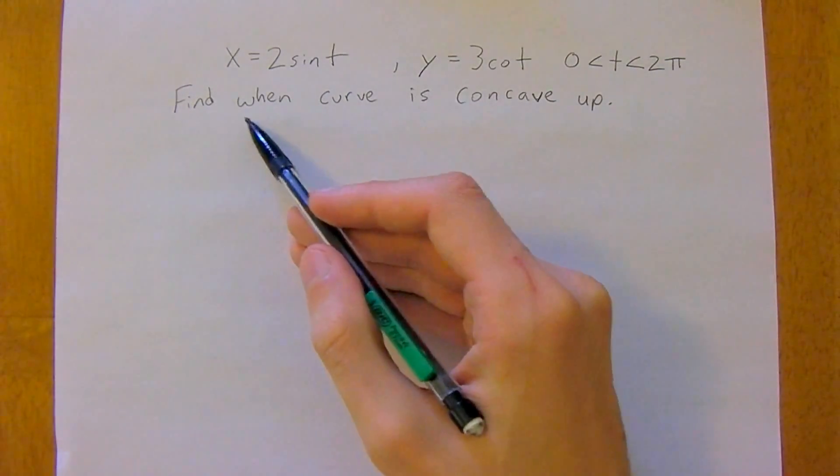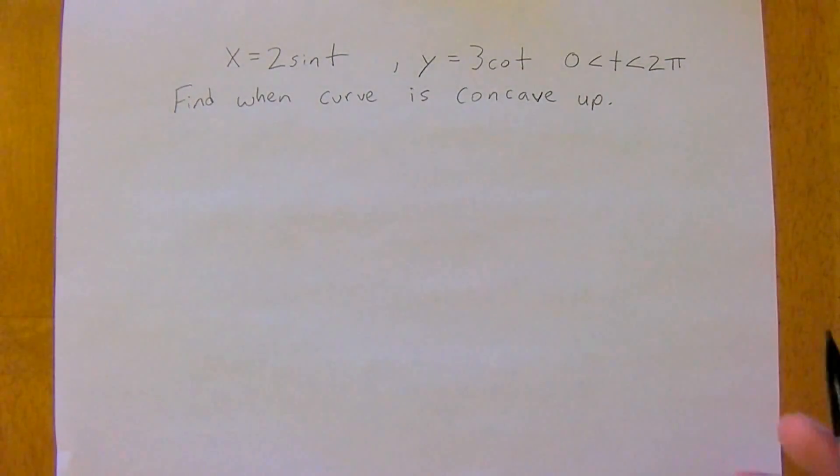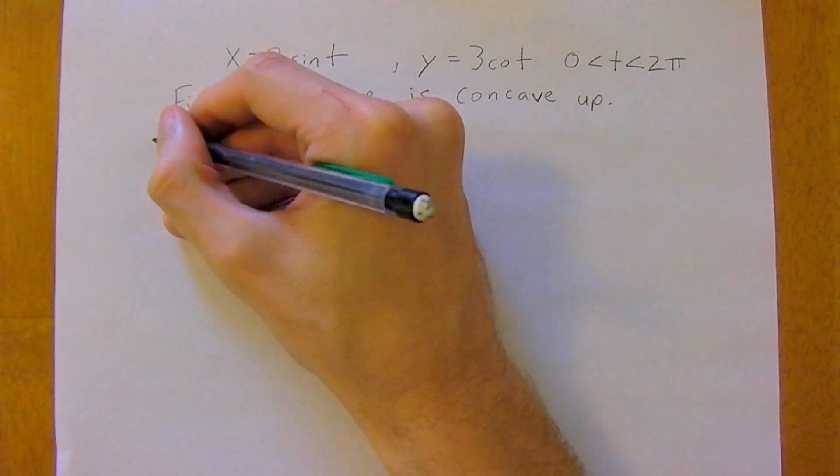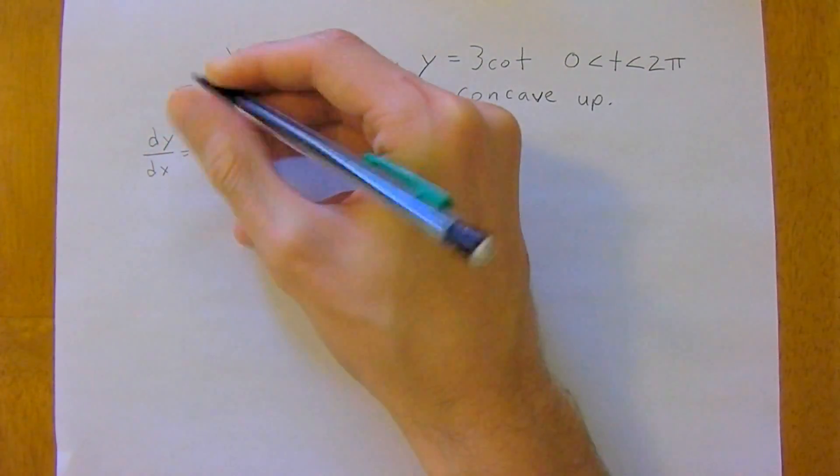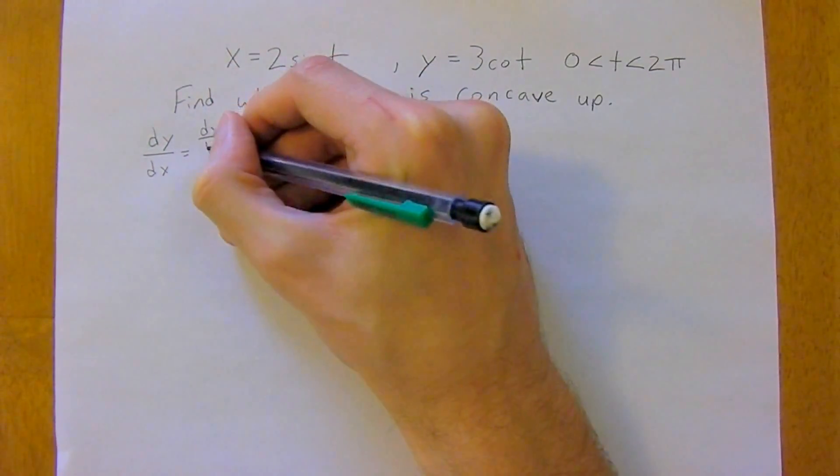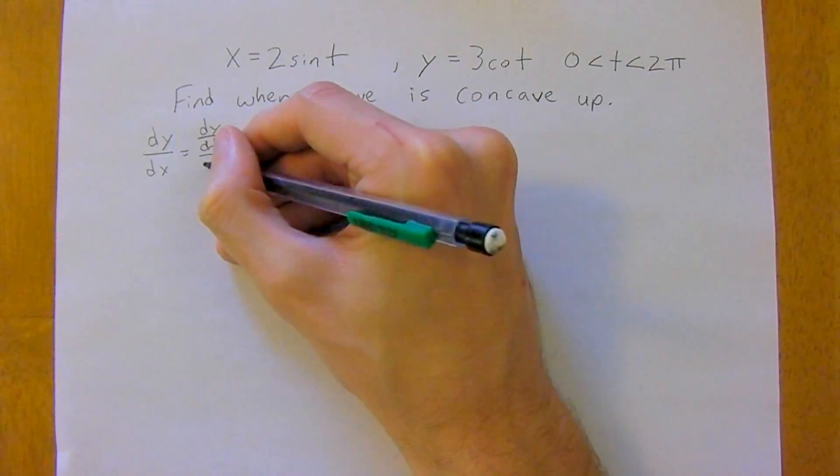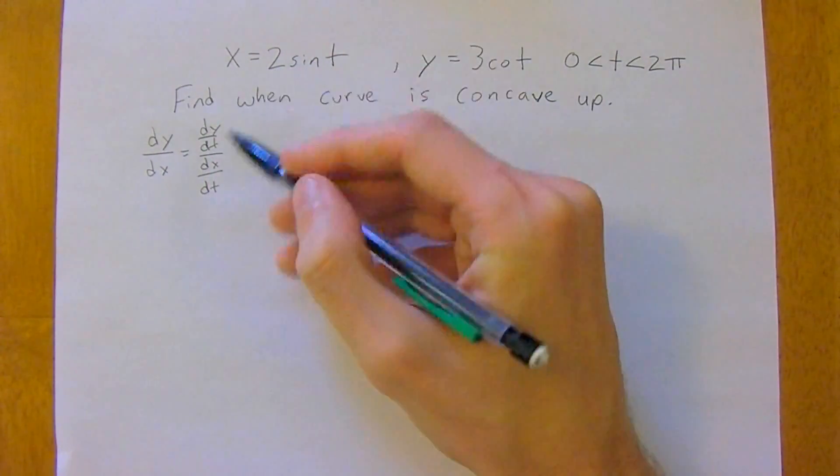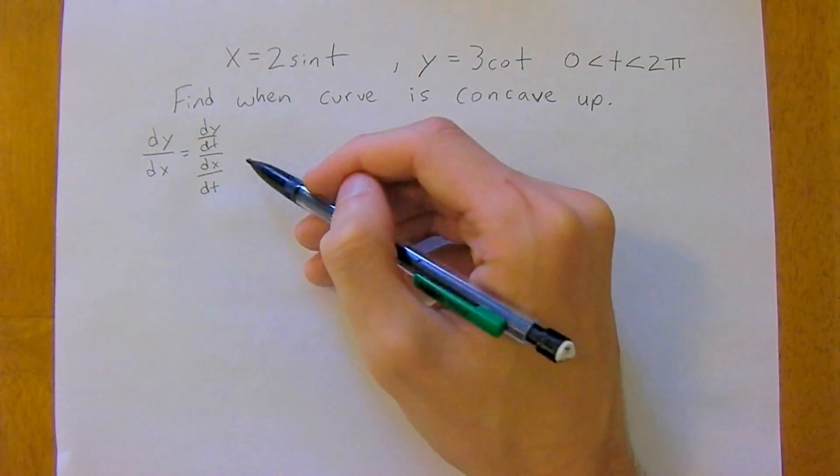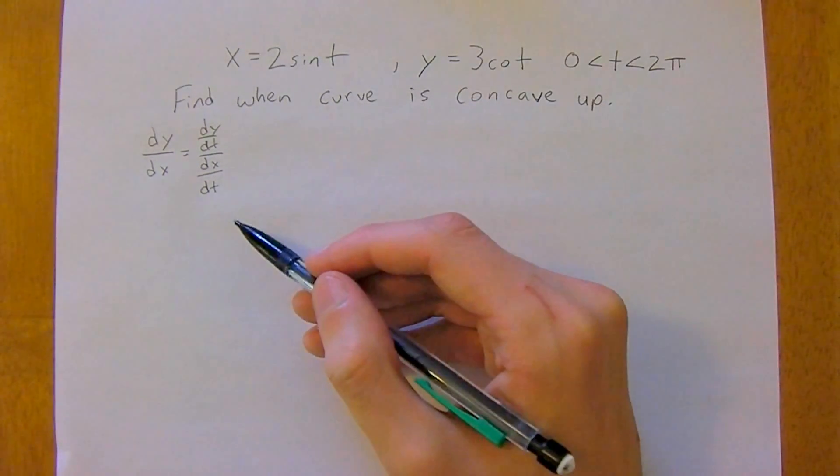So we want to find out when this curve is going to be concave up. First, we will take the first derivative, so dy over dx equals dy over dt divided by dx over dt. And if this is confusing, we discuss it in future videos, so just go back and watch those videos.